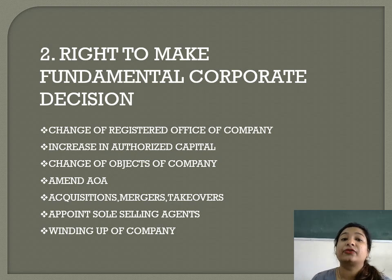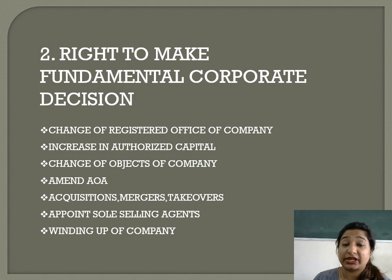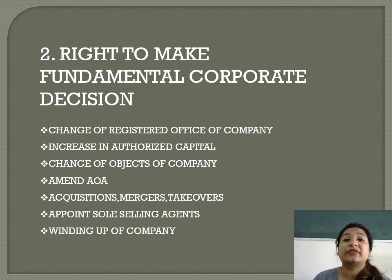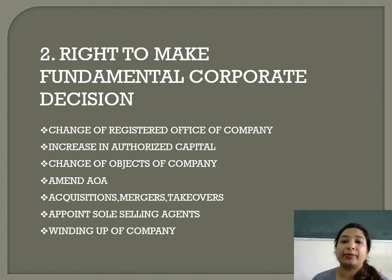Next is amending articles of association — if we have to make changes in the articles of association, we need to take permission from the members. Rules can be changed in the company as the government updates its policies and rules. At that time, we have to incorporate changes in the articles as well, to keep the company updated. However, a memorandum of association never changes, because it records the company's formation and objectives — it is an unalterable document. But articles of association can be changed.